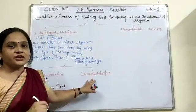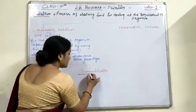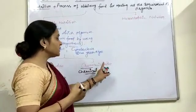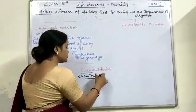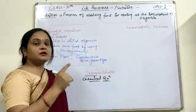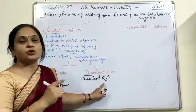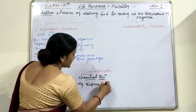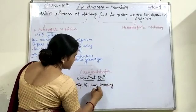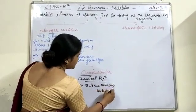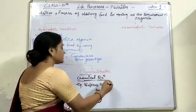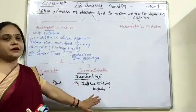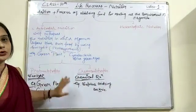In chemo-autotrophic nutrition, 'chemo' stands for chemical. This is when organisms prepare their own food using different types of chemical reactions. An example is sulfur-oxidizing bacteria. This concludes the brief account of autotrophic nutrition.